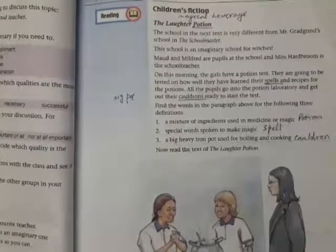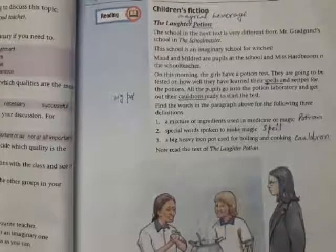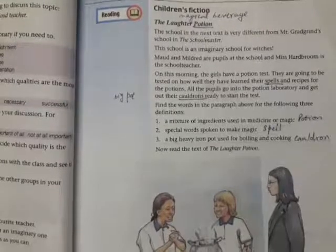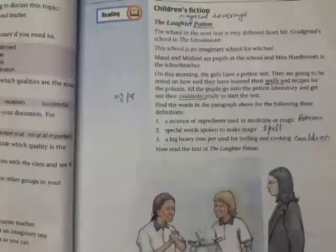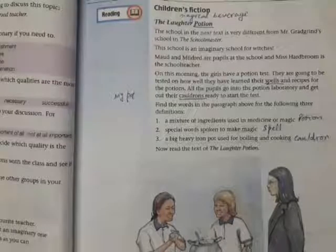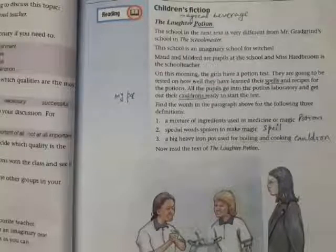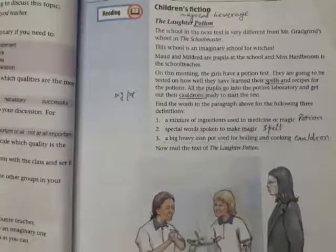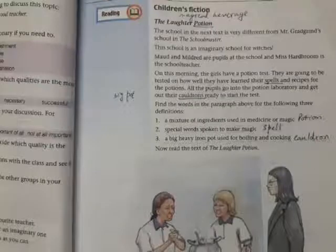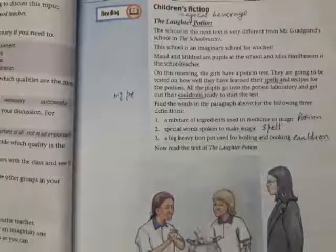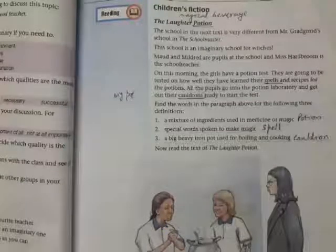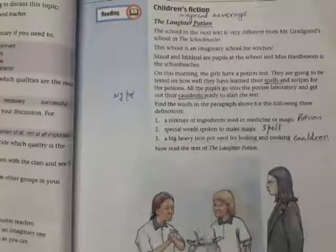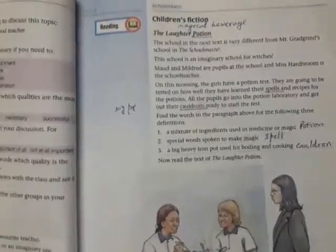The lesson is about an imaginary school of witches. Maud and Mildred are students and Miss Hardbroom is their teacher. They are going to be tested on how they have learned the spells. Find the words in the paragraph for the following three definitions: Number one, a mixture of ingredients used in medicine or magic - we have used the word potion. Number two, special words spoken to make magic - we have used the word spell. Number three, a big heavy iron pot used for boiling and cooking - we have read the word cauldron.